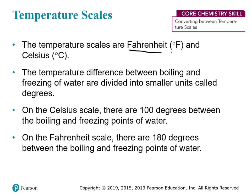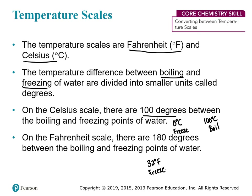There are different temperature scales. Fahrenheit is what we use in the US — you'll see it on weather apps. Celsius is used everywhere else in the world. The difference between them is how many degrees separate boiling and freezing of water. On the Celsius scale, there are 100 degrees between freezing (0°C) and boiling (100°C). On the Fahrenheit scale, it's 180 degrees — 32°F freezes and 212°F boils.